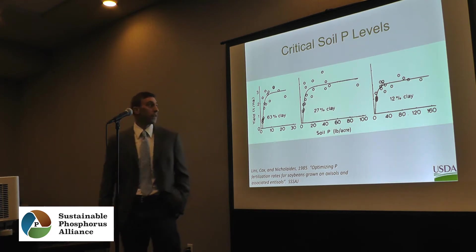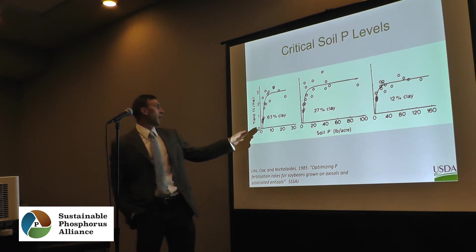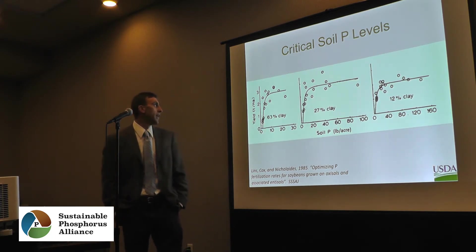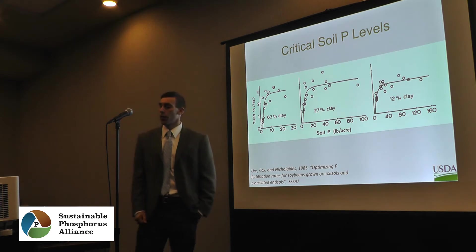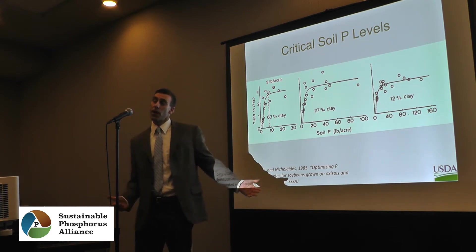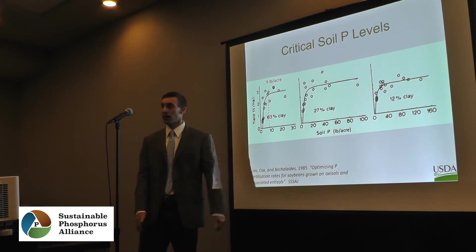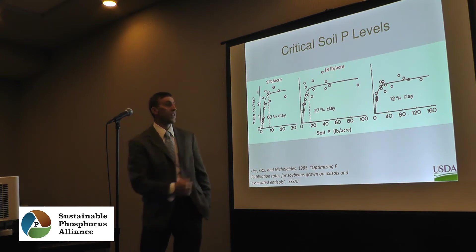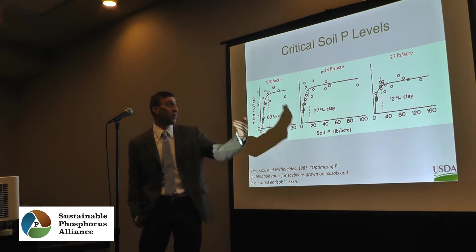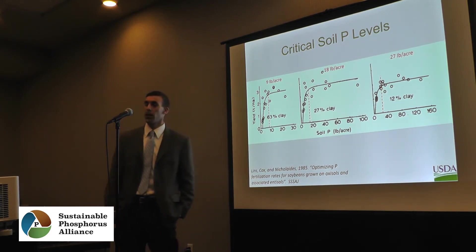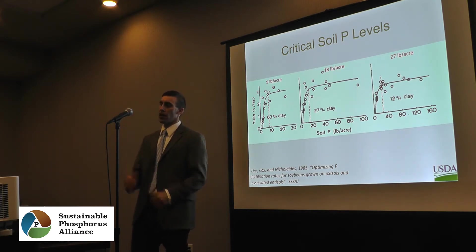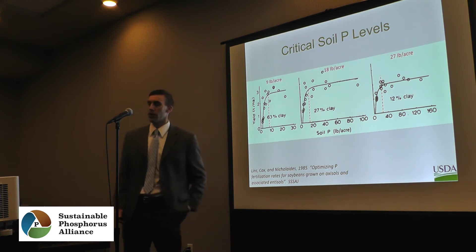Here's an example of what he's talking about. These are three different soils — from a heavy clay soil down to a sandy soil in North Carolina growing soybean. You can see the critical value varies for each soil. On the heavy clay soil, you only need nine pounds of phosphorus per acre to hit maximum yield. You need 18 pounds per acre for the medium soil, and 27 pounds per acre for the sandy soil. This illustrates why you get such scatter in the relationship when you group all soils and conditions together.